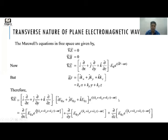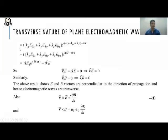Substituting the electric field components and differentiating, we get i K_x E₀x + i K_y E₀y + i K_z E₀z times e^{i(K·r − ωt)} = 0, which gives i K·E = 0, or K·E = 0. Similarly, from div B = 0 we can show K·B = 0. This shows that E and B are perpendicular to the direction of propagation, confirming that electromagnetic waves are transverse in nature.